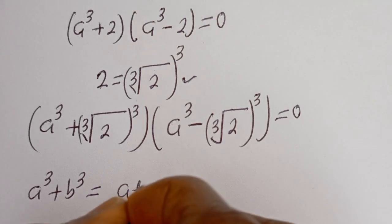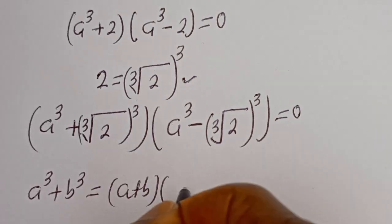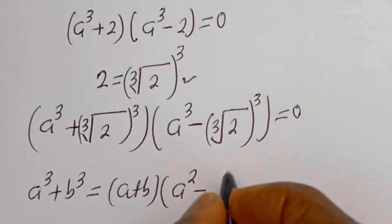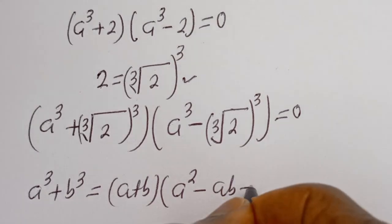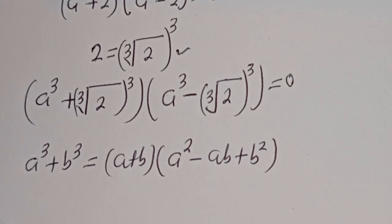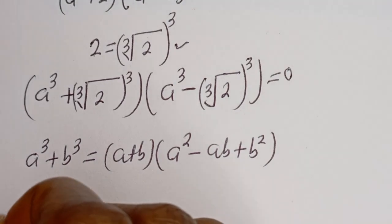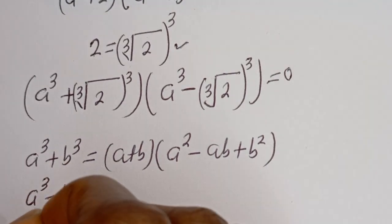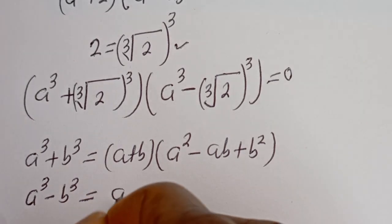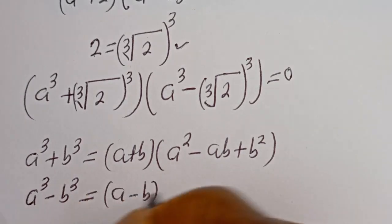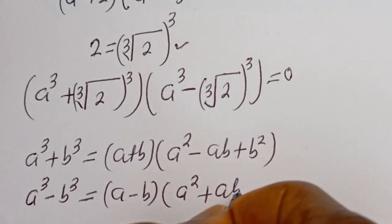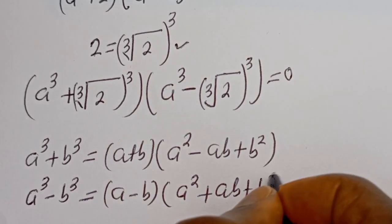A to the power of three plus b to the power of three is equal to a plus b bracket a squared minus ab plus b squared. Also, if you have a to the power of three minus b to the power of three, this is equal to a minus b bracket a squared plus ab plus b squared.